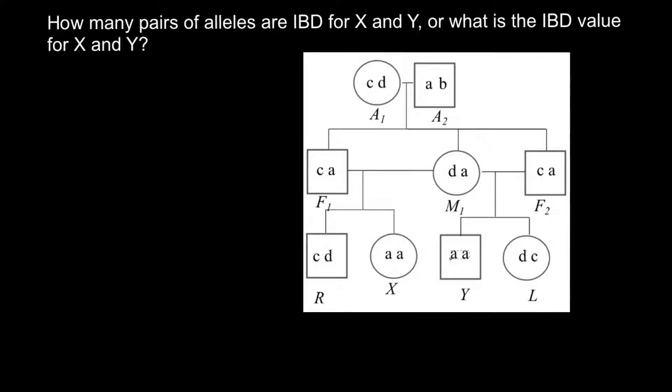Hello and welcome to Nikolai's genetics lessons. Today's problem is: how many pairs of alleles are IBD for X and Y, or what is the IBD value for X and Y? First of all, IBD means identical by descent.